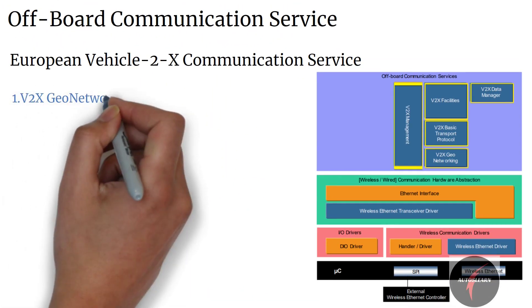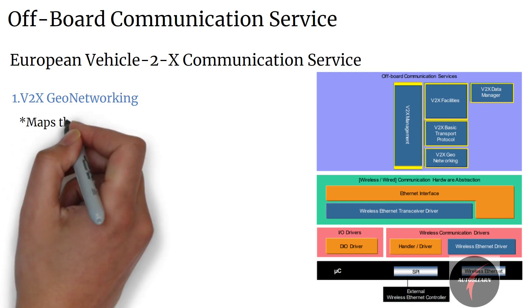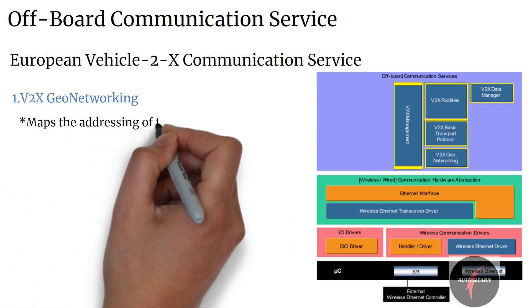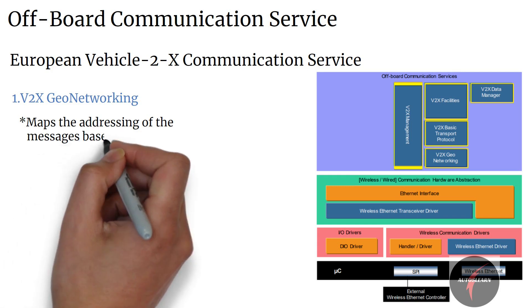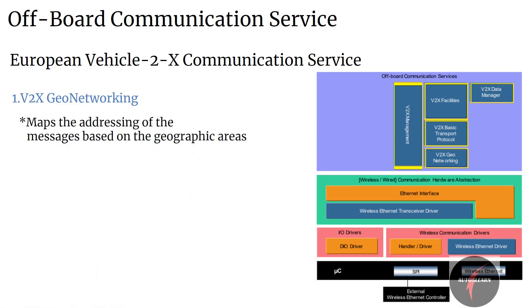Firstly, Vehicle-to-X Geo-Networking. Vehicle-to-X Geo-Networking maps the addressing of the messages based on geographic area, since the respective Ethernet frames have their own Ethernet type.